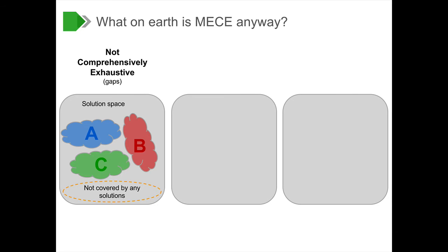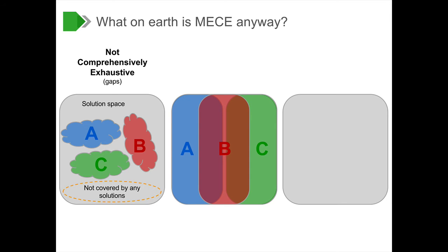Now let's take the same solution space, but assume that we have three overlapping solutions. It is clear that the three solutions adequately cover the entire solution space. However, A, B, and C are overlapping. The three solutions in this case are not mutually exclusive. Listing one of the solutions inherently implies listing another one because of the overlaps.